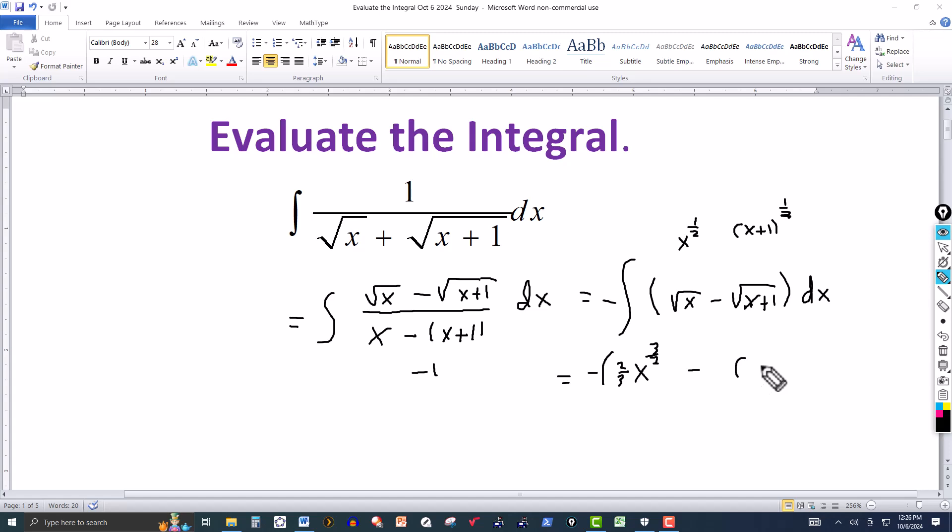And I can do the same thing with this one here. So this will be x plus 1. Again, add 1 to the one-half, this gives me 3 halves. Divide the coefficient by 3 halves. This gives me 2 thirds here. And that plus the constant of integration.